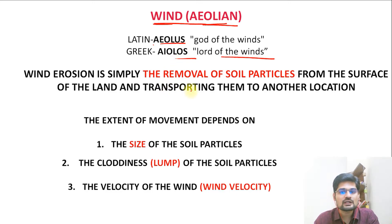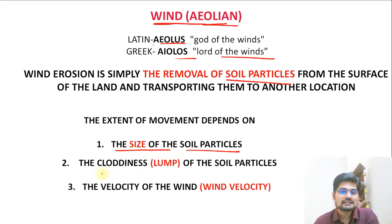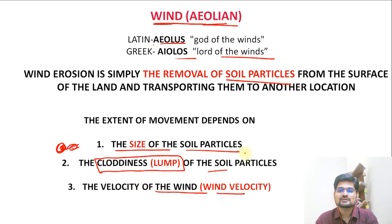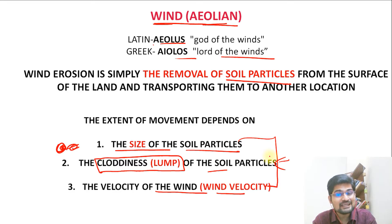Wind causes erosion and removal of soil particles. What is important for this removal? The size of the soil particles matters, then their shape matters — whether they are in a group or sorted or unsorted. The velocity of the wind also matters. These three things determine whether material will be eroded, to what extent it will be carried, and in what way it will be deposited.